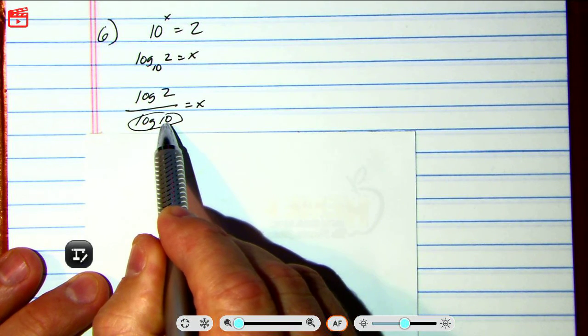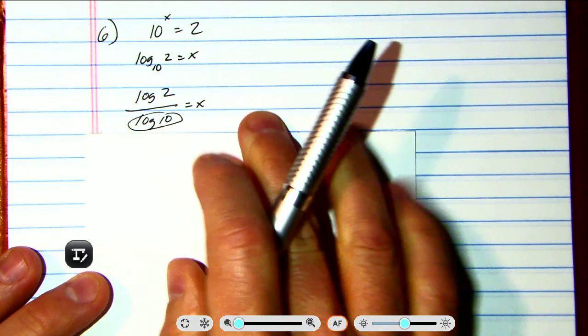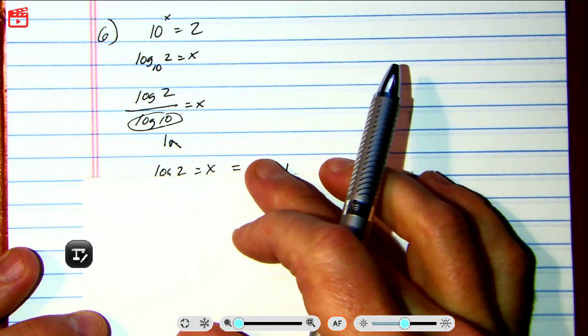Now something I know about log 10, because it's base 10, when the base and the argument are the same, this becomes a 1. So that's what that 1 is. So basically you're just trying to solve this equation right here.